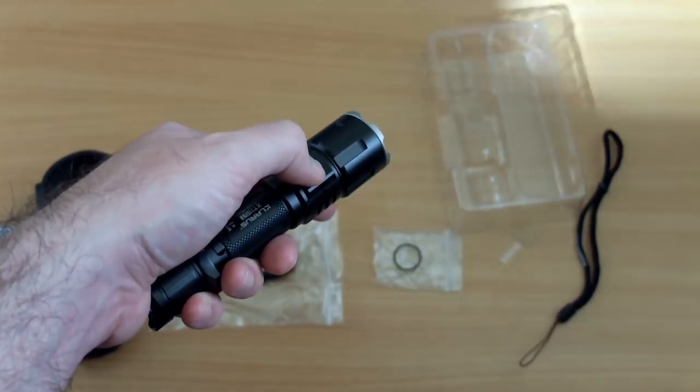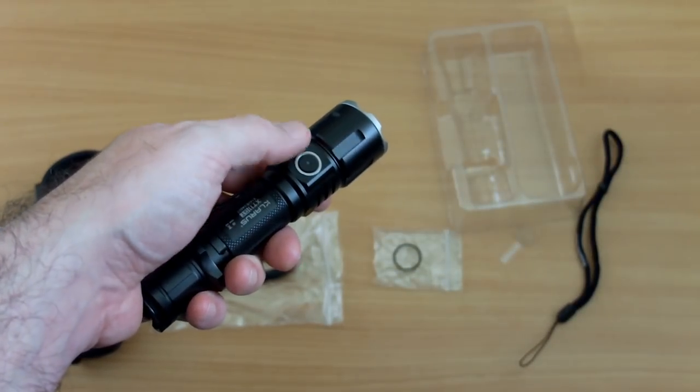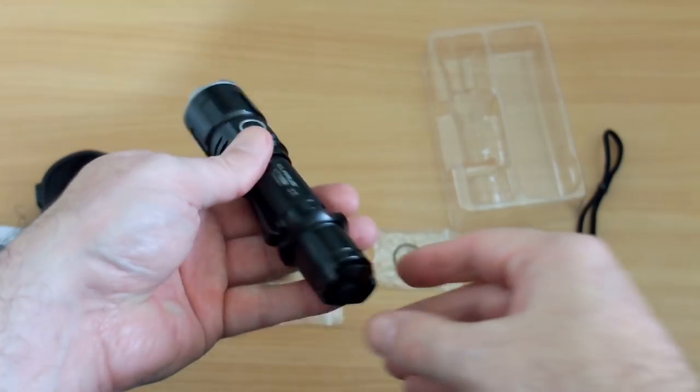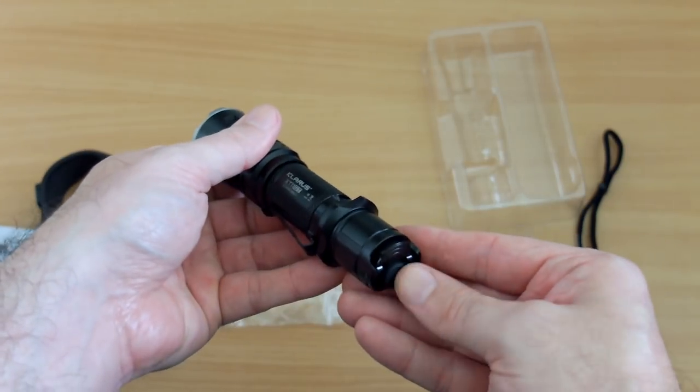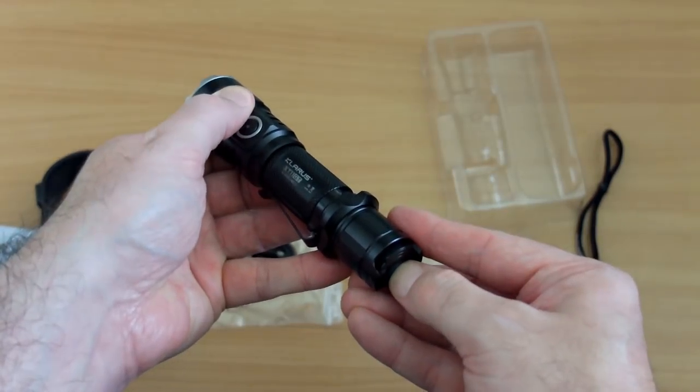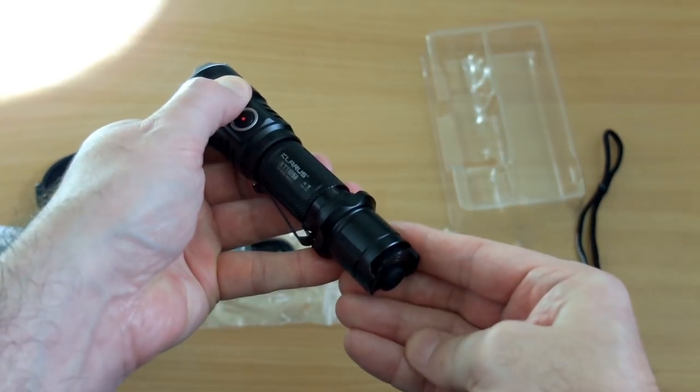You can also go into the strobe modes. You have two strobe modes on this torch. I tend to reconfigure this so that you have instant access to the turbo and low modes on the two tail switches, but you can customize it how you want.